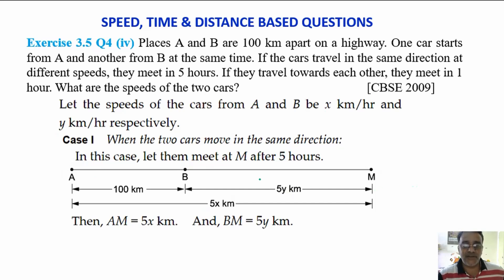Now use geometry. What is AM minus BM? AB. Right. So AM minus BM equals AB. And if you substitute what we are getting? 5x minus 5y equals 100.